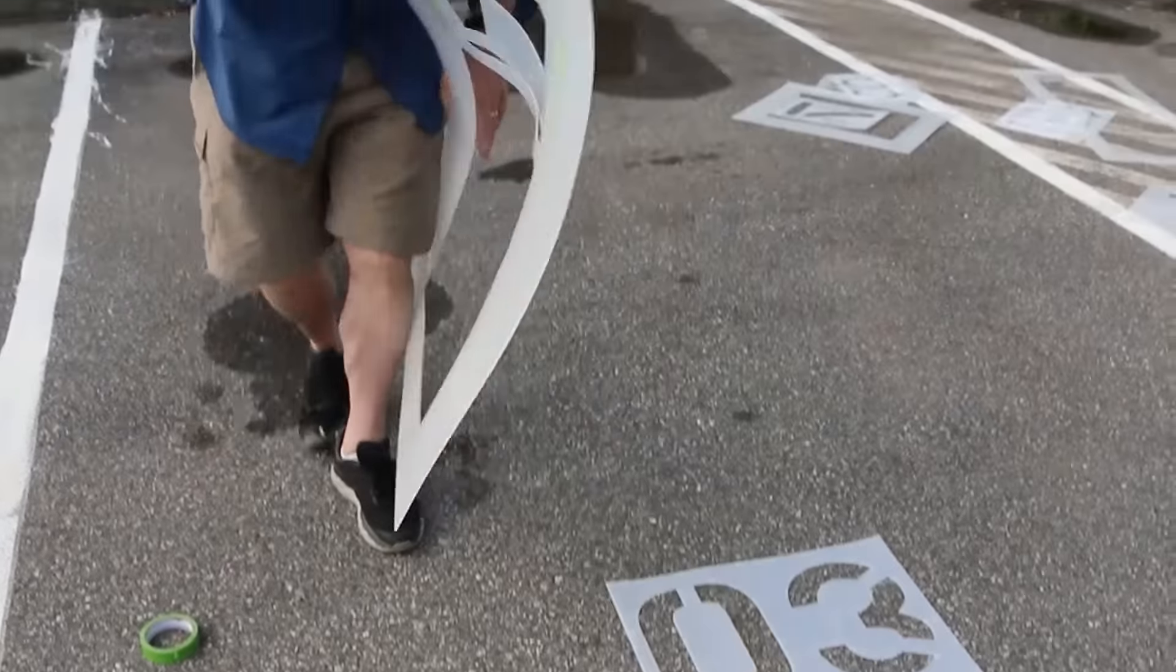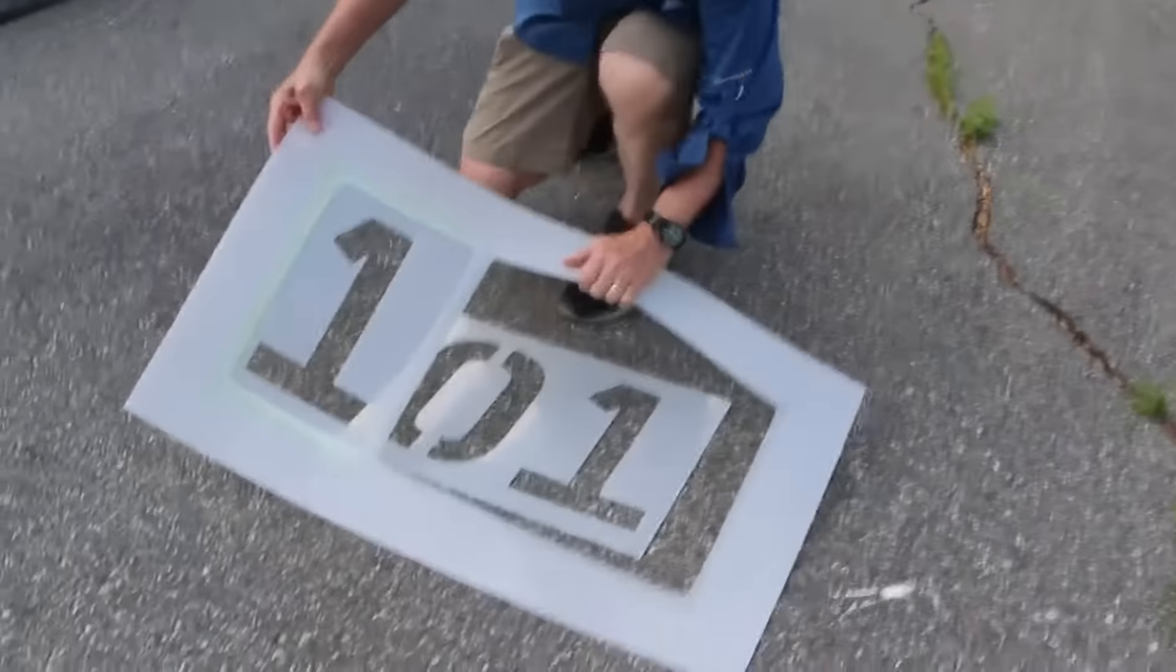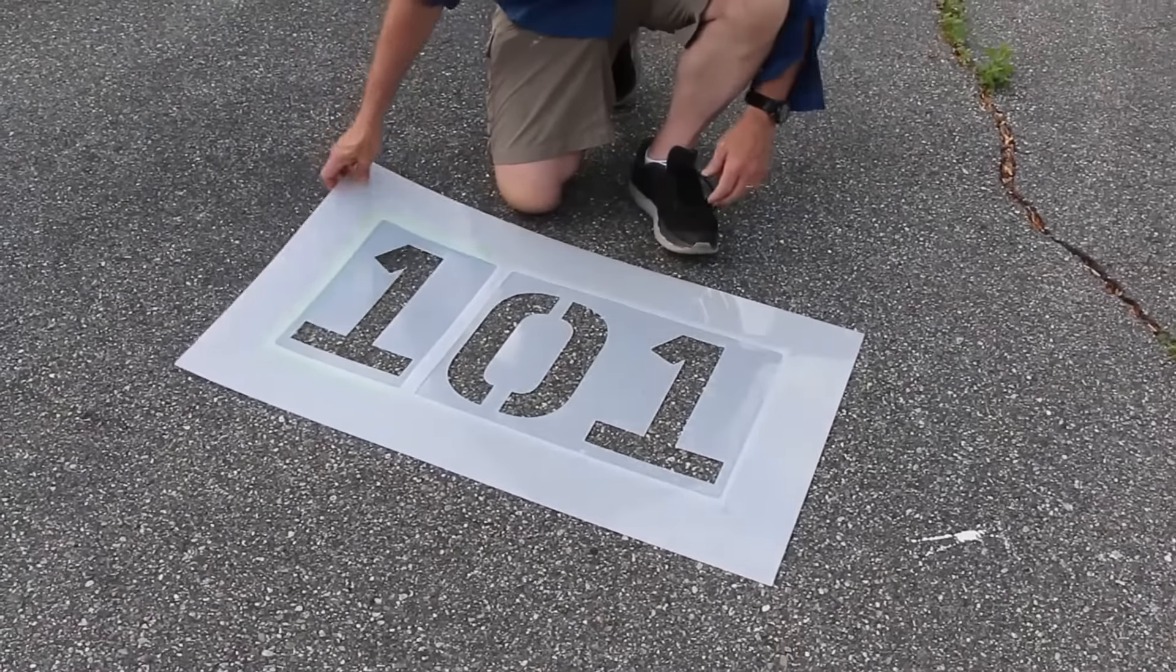With your two-digit stencils in place and properly aligned, simply place the holder over the first two numbers and begin painting.